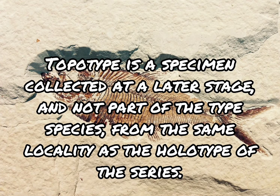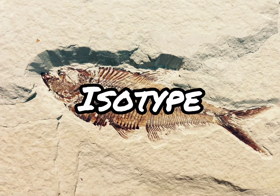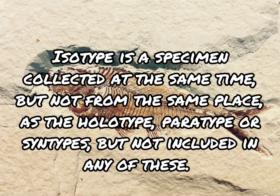Topotype is a specimen collected at a later stage, and not part of the type series, from the same locality as the holotype. Isotype is a specimen collected at the same time, but not from the same place as the holotype, paratype, or syntypes, but not included in any of these.